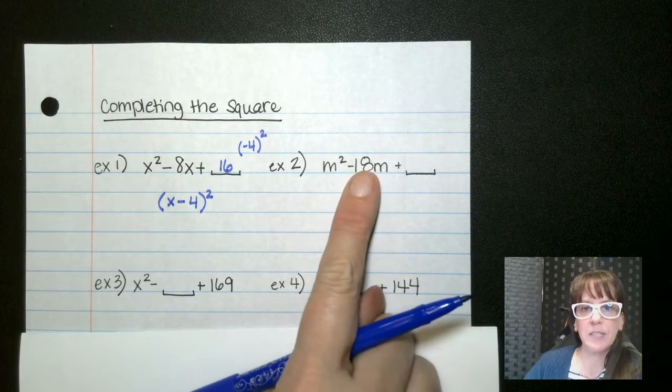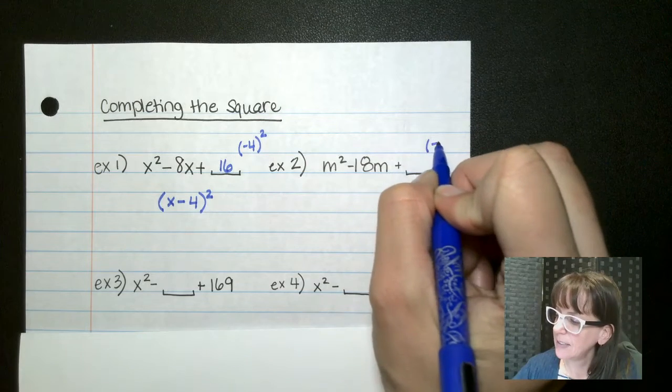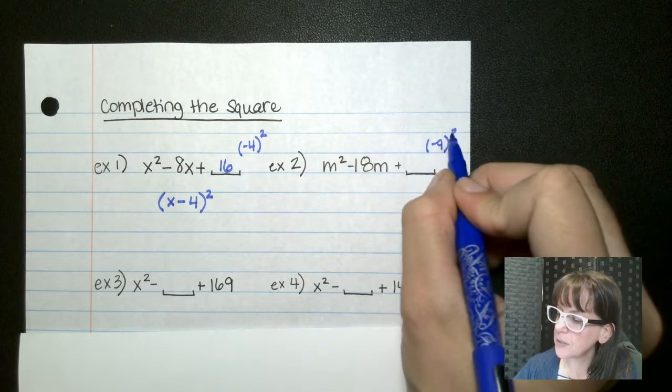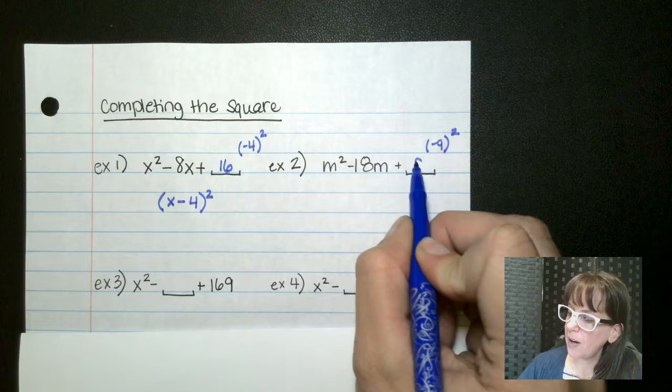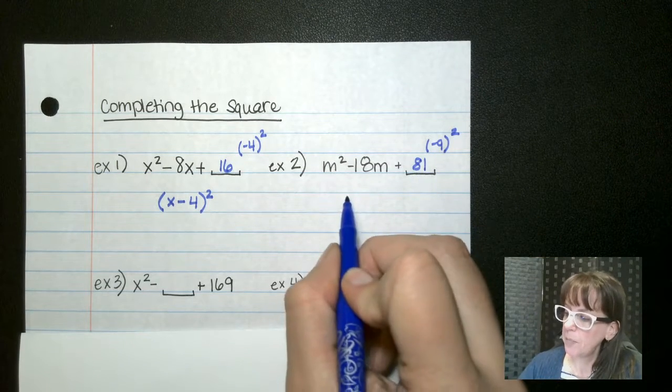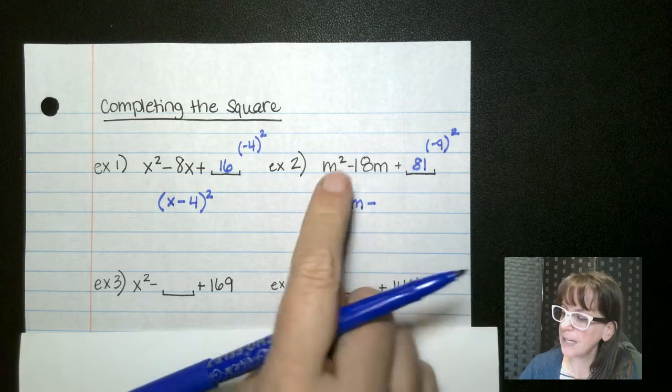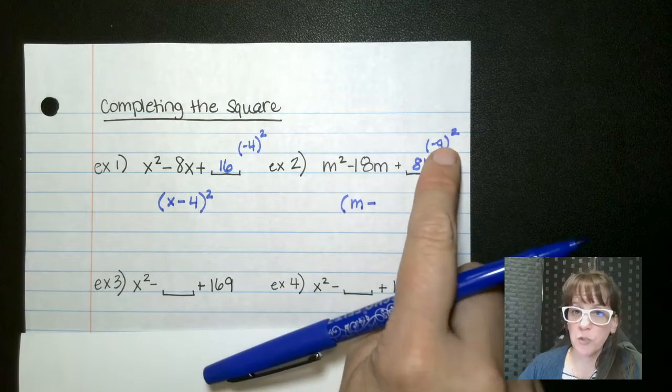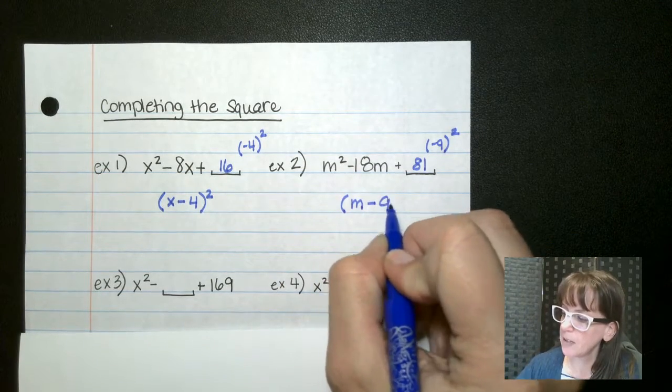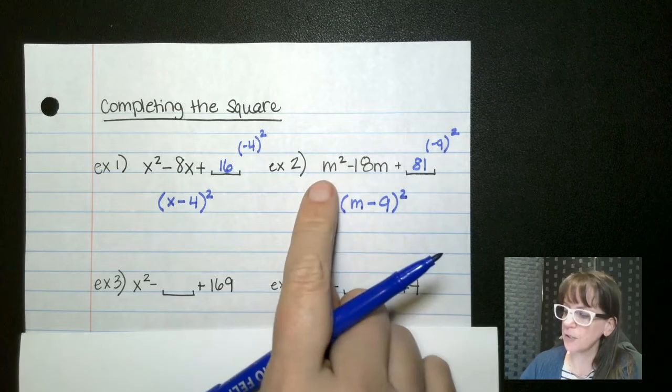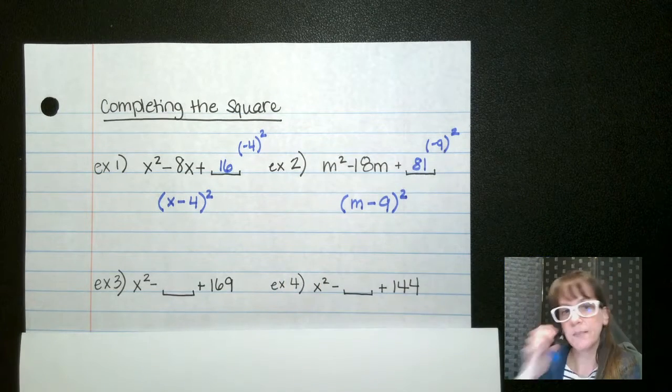So same with this one. If we take half of this, that is negative nine squared. That's gonna be positive 81. But to factor this, we would end up with m minus, because remember, we always use this first sign, which is why that's important to put that there, nine squared. Basically, you're taking one of these and one of these.